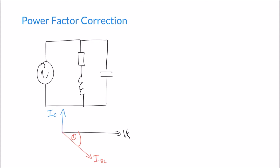By selecting an appropriately sized capacitor, we can produce a capacitor current that is going to cancel out the reactive component — the vertical component — of our motor current, or the current going through the resistor and inductor. If our capacitor current is sized such that it balances or cancels out our reactive current, we're left with a resultant current that is completely in phase. Our resultant current would be in phase with the supply voltage, because we've used that leading capacitor current to cancel out the lagging effect of the inductor.